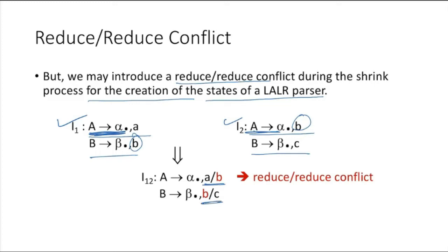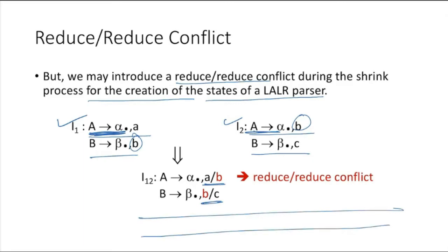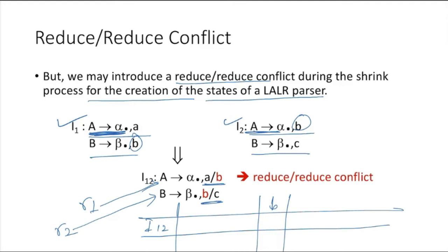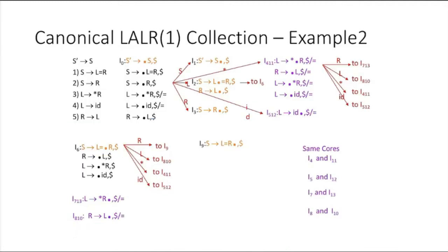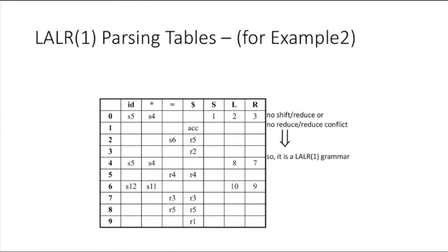After merging into a single state, when generating the parsing table, for the input symbol 'b', both A → α• (giving reduction R1) and B → β• (giving reduction R2) will need to be entered in the 'b' column. So R1 and R2 both appear in that cell, creating a reduce-reduce conflict. This is an example of a reduce-reduce conflict introduced by the LALR merging process.